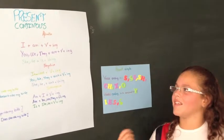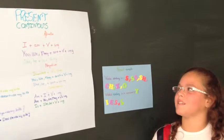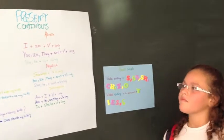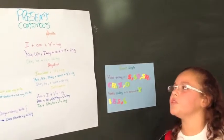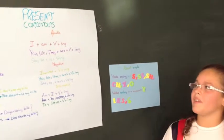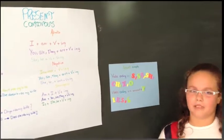With I: I plus am plus verb plus object. Then you, we, or they, plus are, plus verb, plus object.